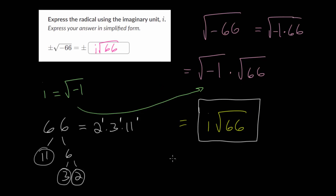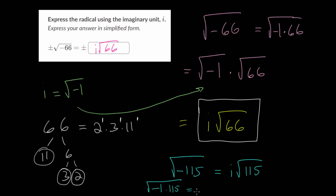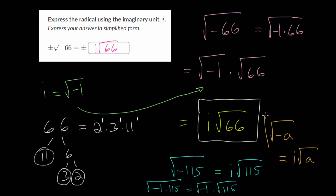In general, with these problems, if we have the square root of minus 115, we can just rewrite this as i times the square root of 115, by separating into the square root of minus 1 multiplied by 115, then splitting into two square roots. So generally, when we have the square root of minus a, where a is some positive number, this equals i multiplied by the square root of a. From there, you simplify the square root of a as much as possible — sometimes it can be simplified, like with the square root of 48, but often it can't, like this example.